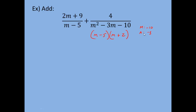Once I've factored, I want to find a common denominator — the LCD. The least common denominator between (m − 5) and (m − 5)(m + 2) is (m − 5)(m + 2). If a factor appears in one denominator but not the other, it needs to be included. Since m minus 5 shows up in both, you take the highest power of it, which is just m minus 5. So the LCD is (m − 5)(m + 2).